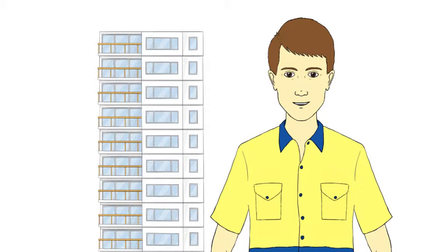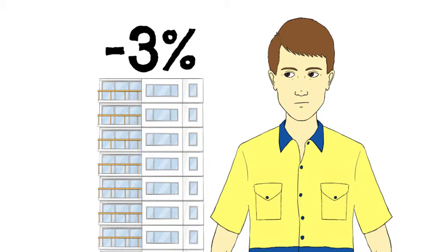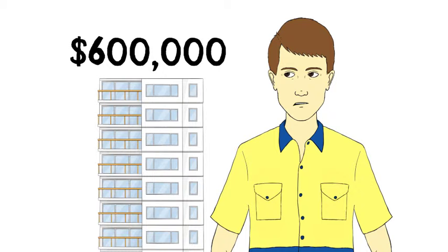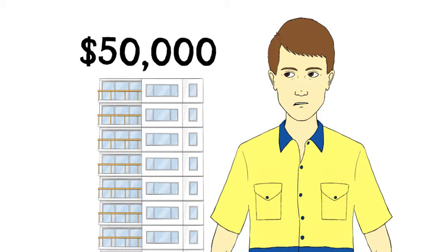But home prices in Australia have fallen about 3% in the last year and by even more in some areas. The bank thinks Joe's apartment is now only worth $600,000, leaving a $50,000 shortfall.